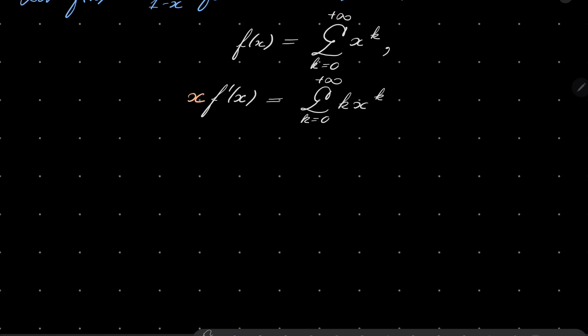All right, and now if I take this and I differentiate it once again, then I have series going from 0 to plus infinity k squared x to the power of k minus 1. And once again if I multiply by x I have x to the power of k here.